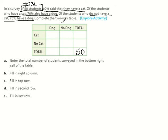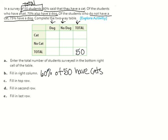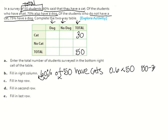Now fill in the right column. 60% have cats, so 60% of 50 have cats. We change the percentage to a decimal by moving the decimal twice, giving us 0.6. Remember, 'of' means multiply, so 0.6 times 50 equals 30 people that have a cat. Then 50 minus 30 equals 20 — that's how many don't have a cat.